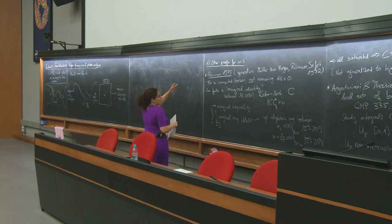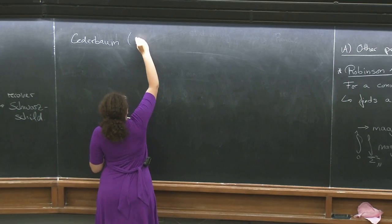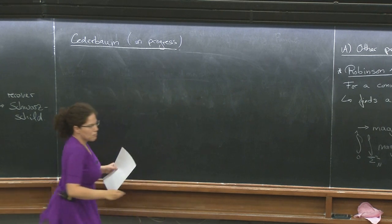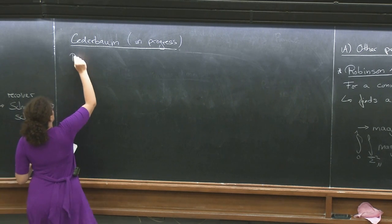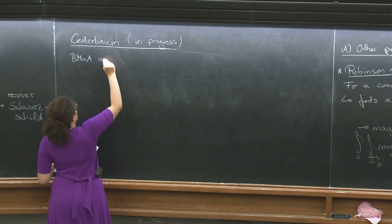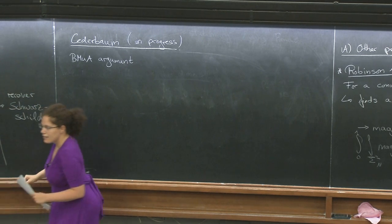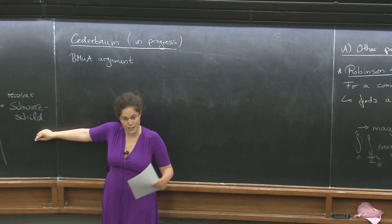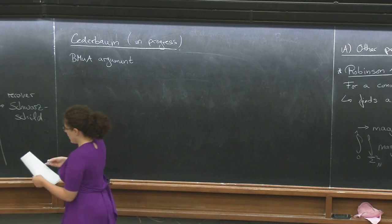The next proof for n = 3 I want to discuss is a proof by myself, not quite yet on the archive — only for baby reasons, she doesn't like me to sit at the computer. It's in progress, but that's not a problem with the proof, just with the typing. It follows a Bunting-Masood-ul-Alam argument up to a point, and then offers a different suggestion for how to recover Schwarzschild without using the Cotton tensor and without using anything inherently three-dimensional. In particular, it will allow everything to be done n-dimensionally.